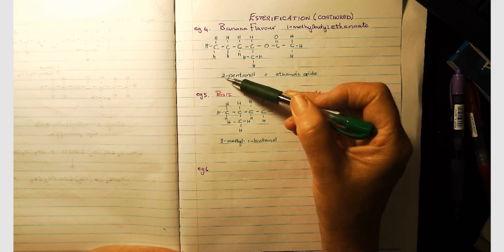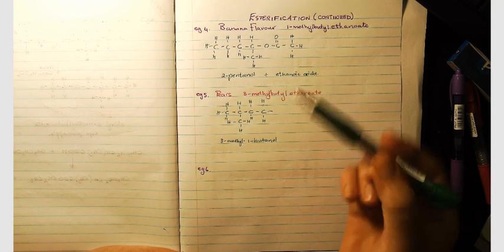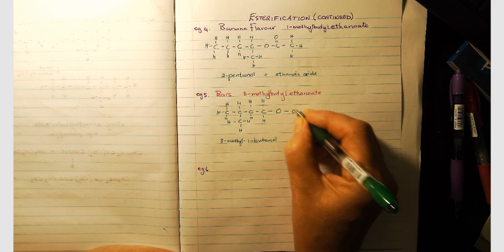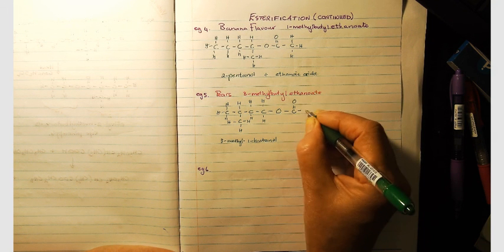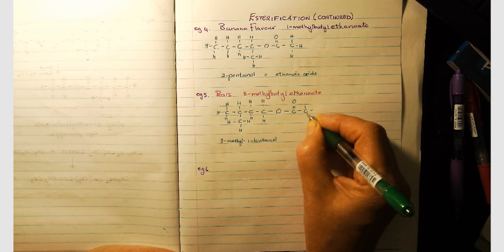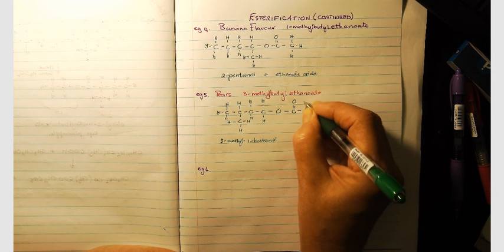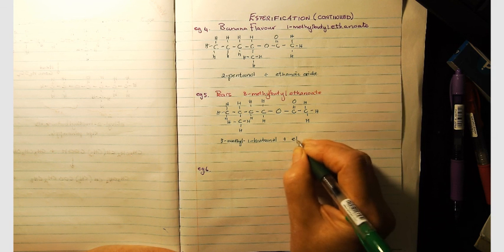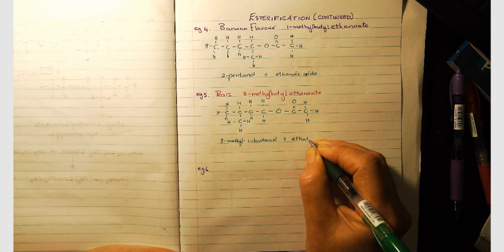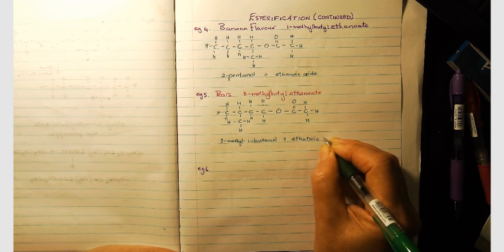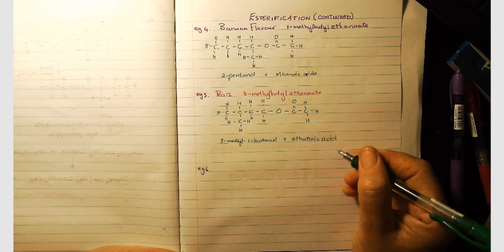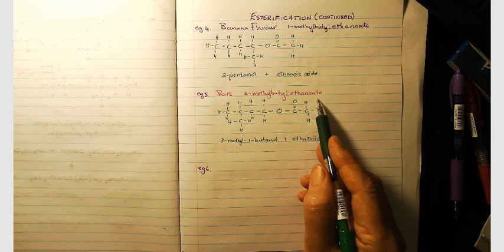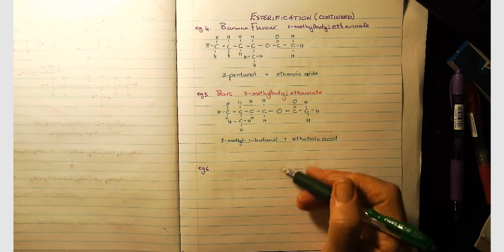But because of the OH group that was attached to the second carbon, it was 2-pentanol. This part of the molecule is joined to the ethanoic acid. So three methyl one butyl and ethanoic acid give you three methyl butyl ethanoate.